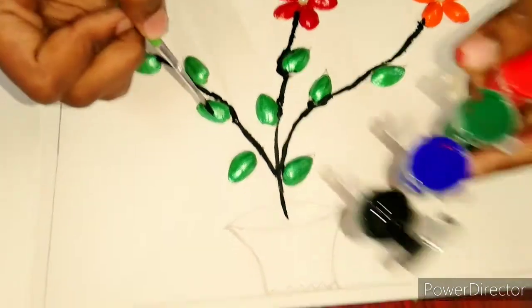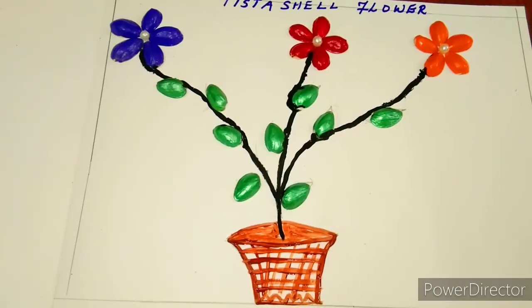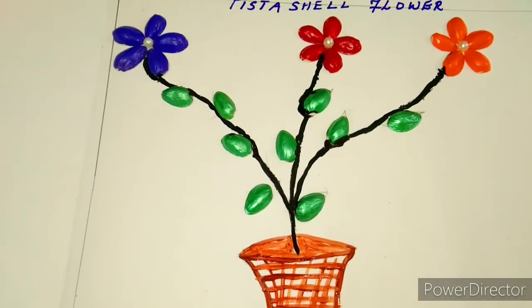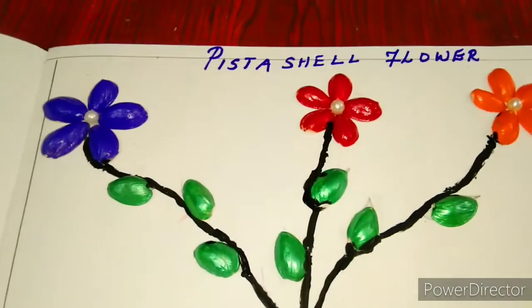I'm using black color paint for the outline. I have stuck the leaves. Now I am using beads to stick on the center of the flowers.